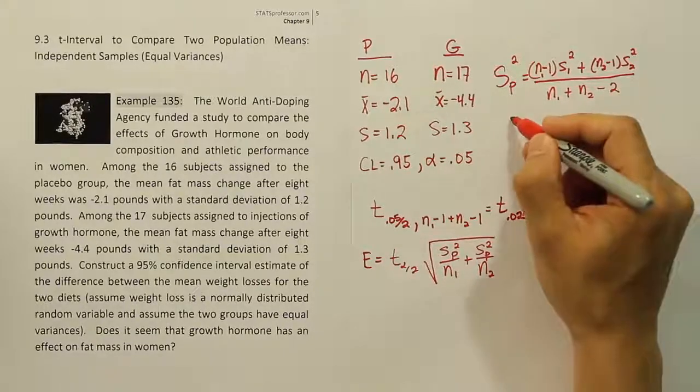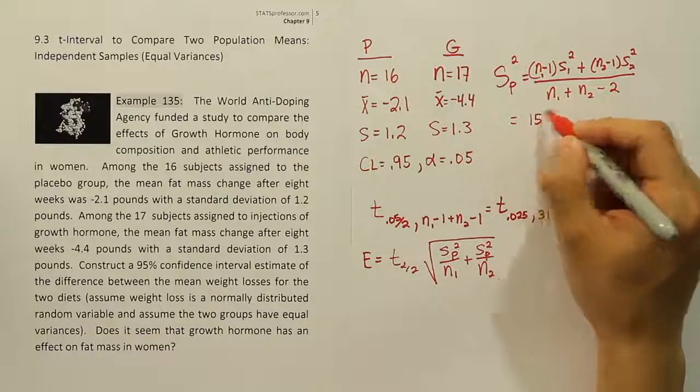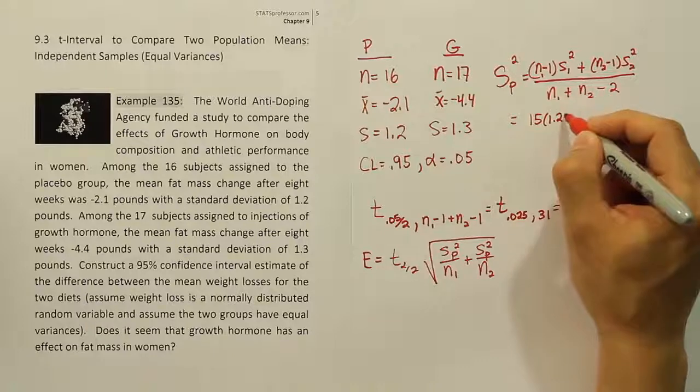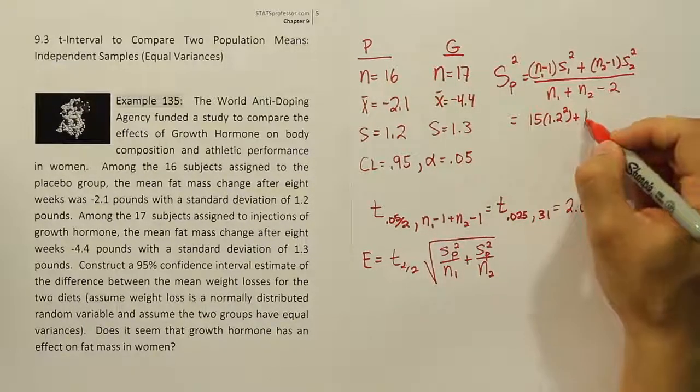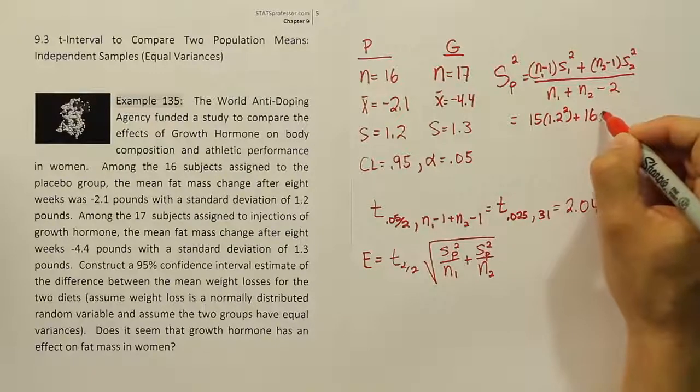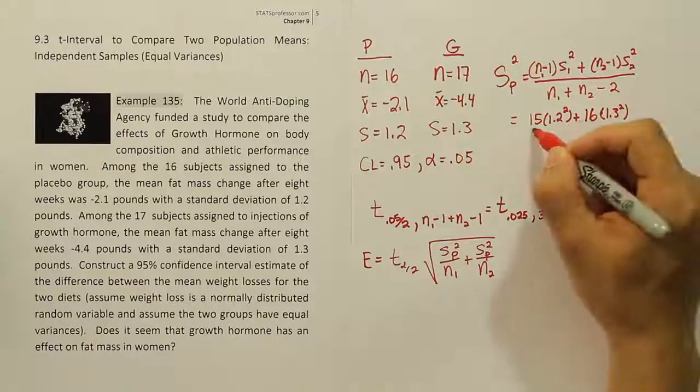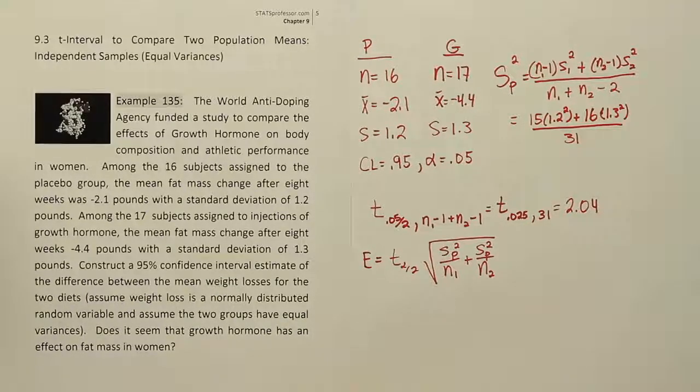Okay, so let's plug in the numbers to get this sp squared thing. 15 would be the first subtraction there, so 15. The standard deviation squared here would be 1.2 squared plus 16 times 1.3 squared. And that would be divided by 31. Okay, let's see what that works out to be.